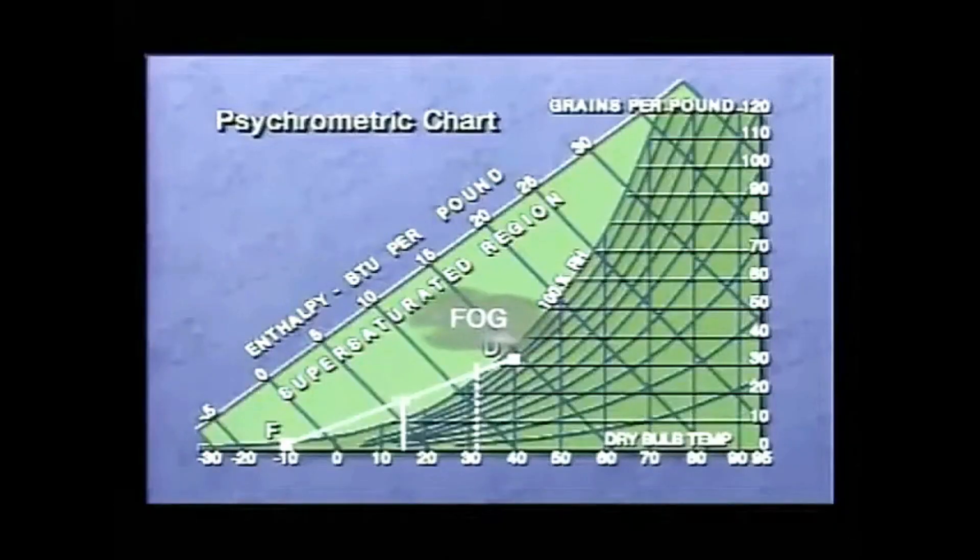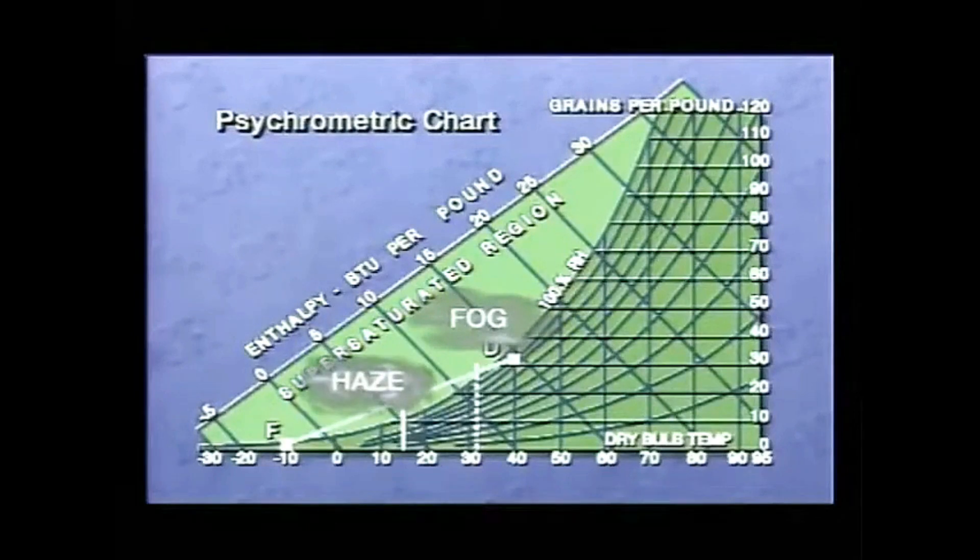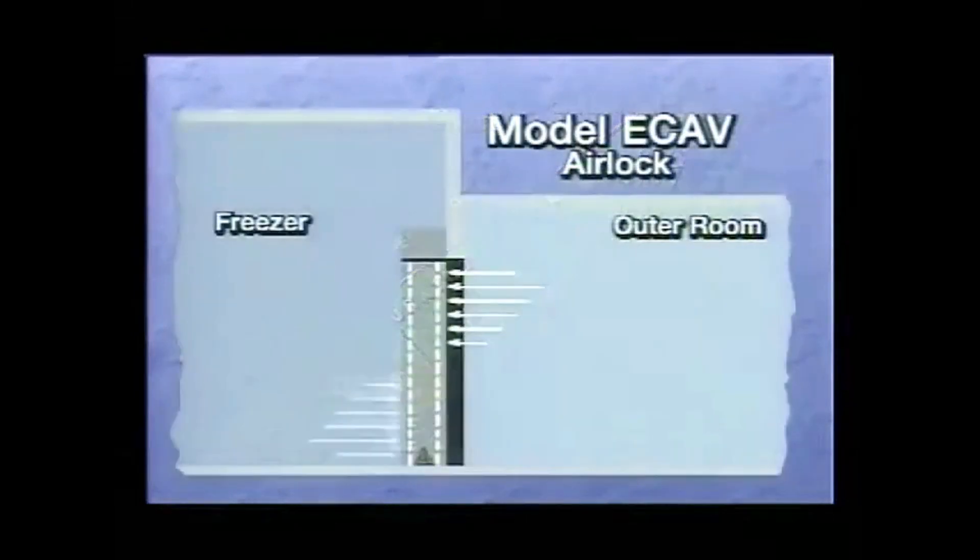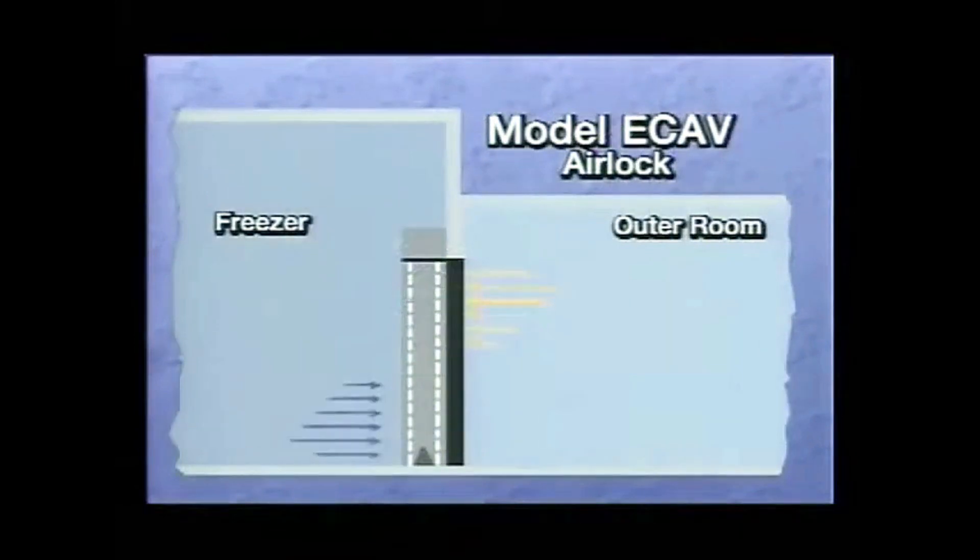Psychrometrics is the study of moisture in the air and the changes in air conditions, such as temperature, absolute and relative humidity, and moisture content. And nowhere are the effects of psychrometric principles more evident than in a cold storage environment.